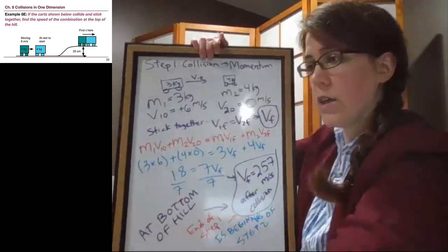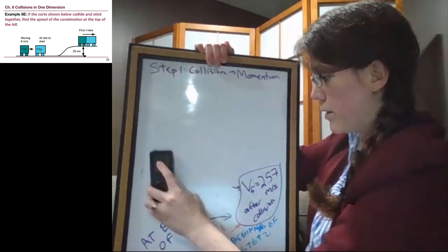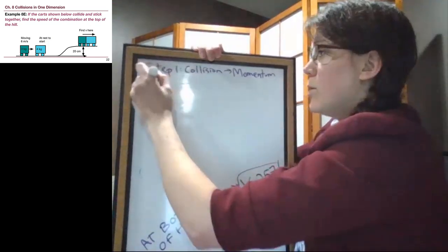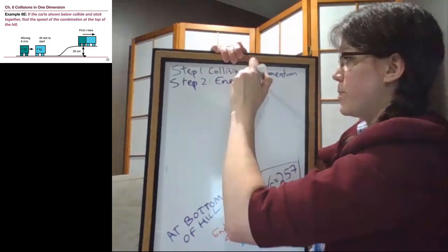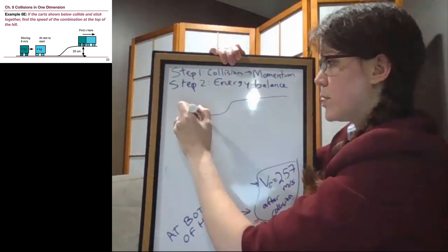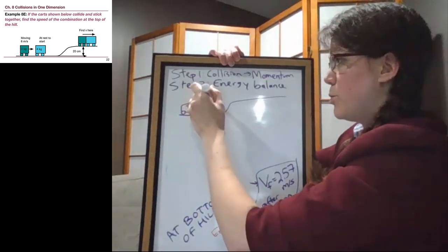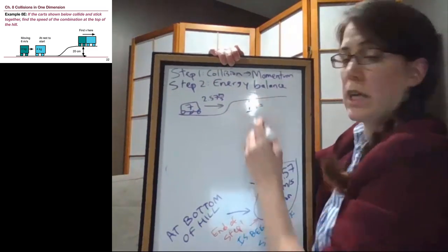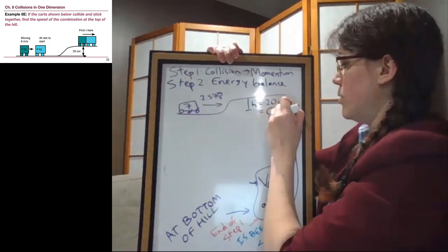All right. So I'm going to draw what step 2 looks like, keeping in mind that we have this result that is at the bottom of the hill. So step 2, in this case, is the energy balance problem, where we have this pair of carts that is a total of 7 kilograms, moving at a speed of 2.57 meters per second at the bottom of a hill. And that hill has a height H. If we look in this slide, that height is 20 centimeters, which means we'll eventually need it to be 0.2 meters.